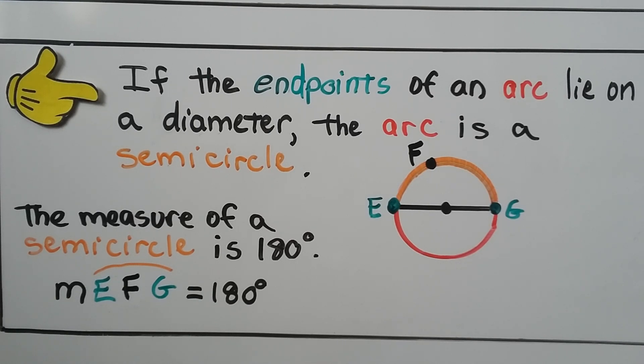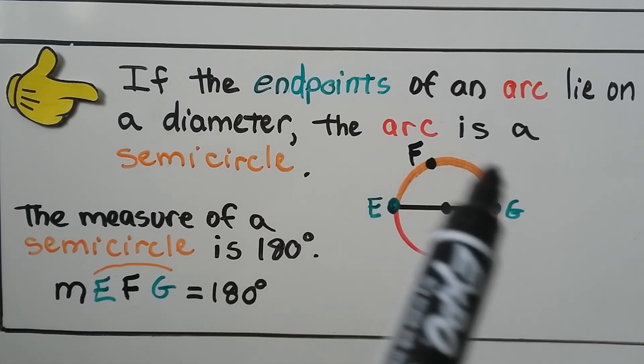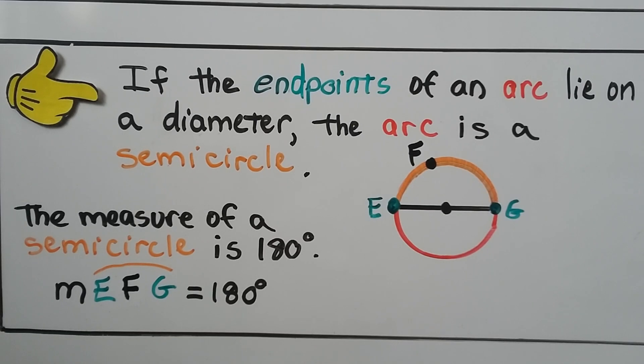If the endpoints of an arc lie on a diameter, the arc is a semicircle. And the measure of a semicircle is 180 degrees. So the measure of arc EFG, this orange arc, is equal to 180 degrees.